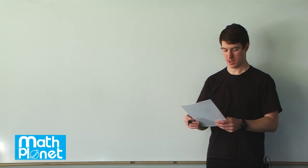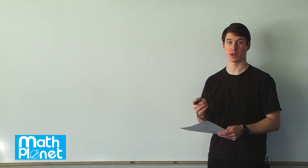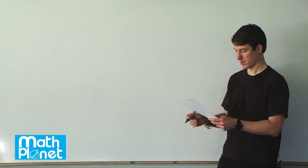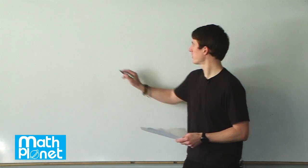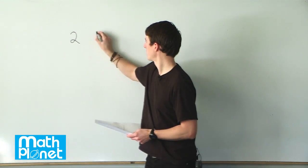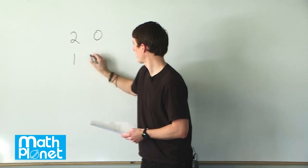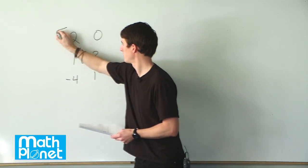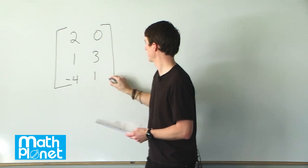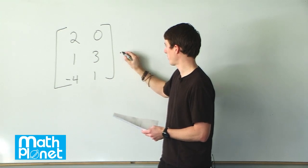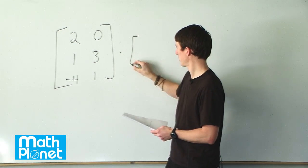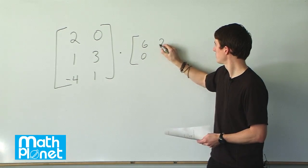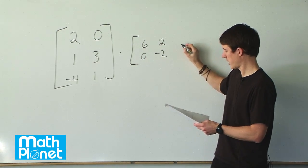Here we have two matrices of different dimensions and we're going to see if we can multiply them. The first matrix is 2, 0, 1 and 3, and negative 4, 1. We want to see if we can multiply that by the matrix 6, 0, 2, negative 2, and 3, 4.